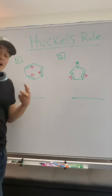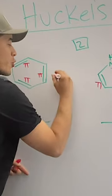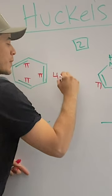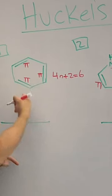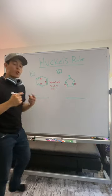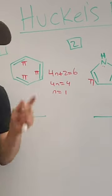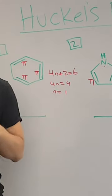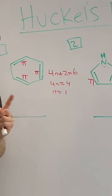In order to calculate Huckel's rule our formula is 4n plus 2 equals the number of pi electrons. So on the left hand side I'm going to get 4n plus 2 equals 6. Solve for n and if you get a whole number, n equals 0, 1, 2, 3, 4, 5, 6, then you are going to be an aromatic structure.